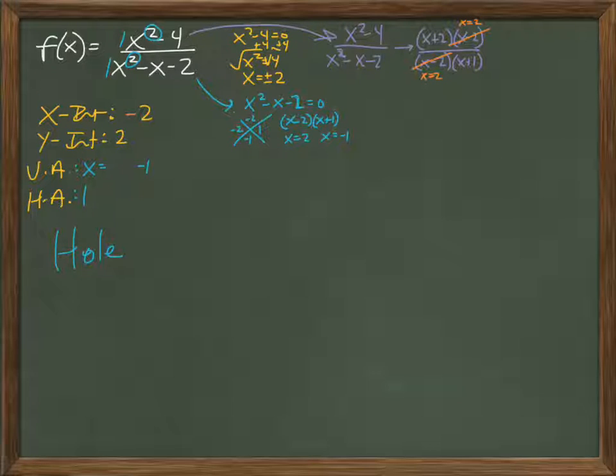So, now I no longer have an issue. And that happens when, the way I like to think about it is, if an x-intercept is the same as a vertical asymptote, there is a hole, and that's what the hole is. But this is mathematically how you find it.